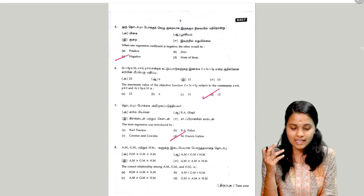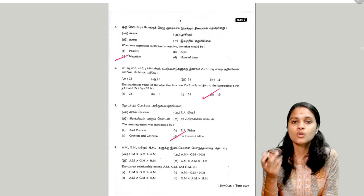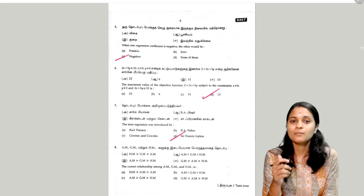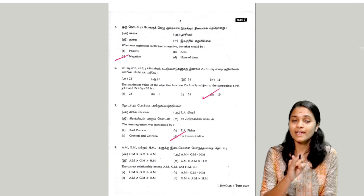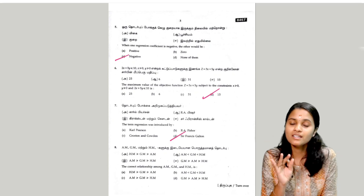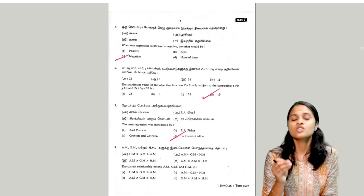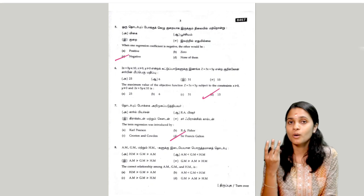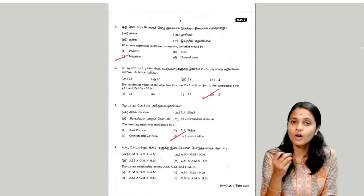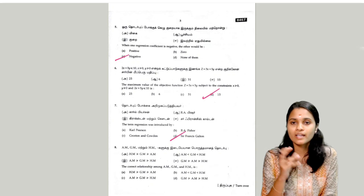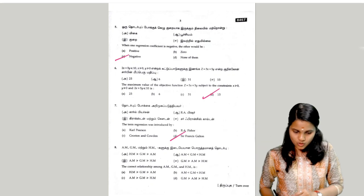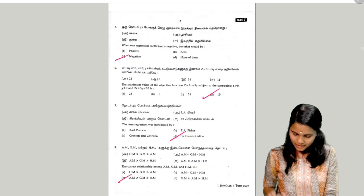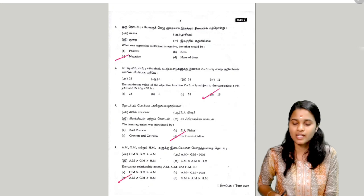The answer is Francis Galton. The next question is the correct relationship — so AM, GM and HM. Arithmetic mean, geometric mean, and harmonic mean — so this answer is the relation. The answer is option C.